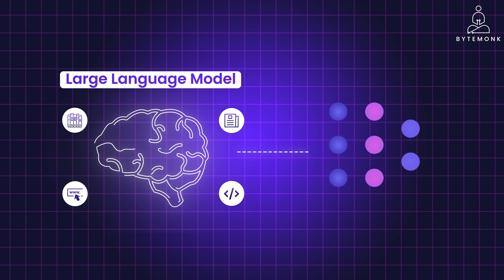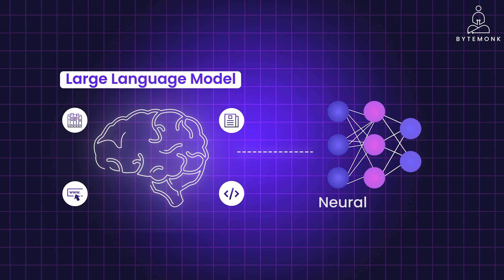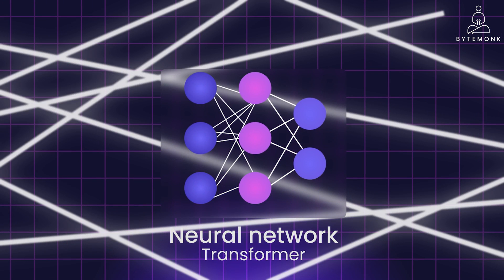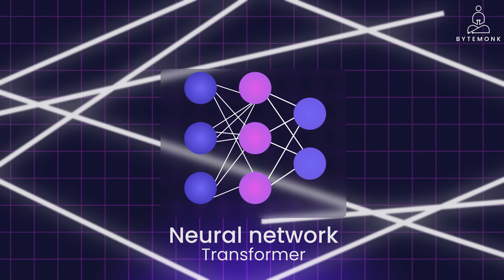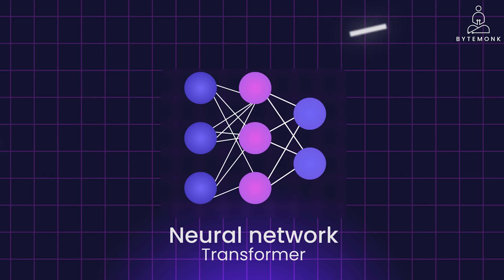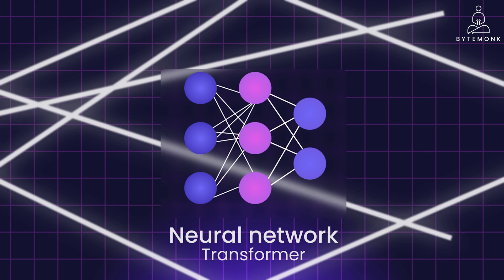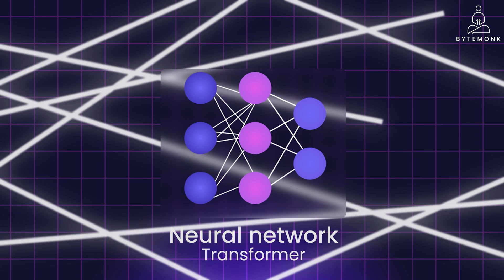LLMs use deep learning techniques like a type of neural network called a transformer. It's like a complex web of connections that can analyze text and learn from it. They are still under development, but they are getting super clever.